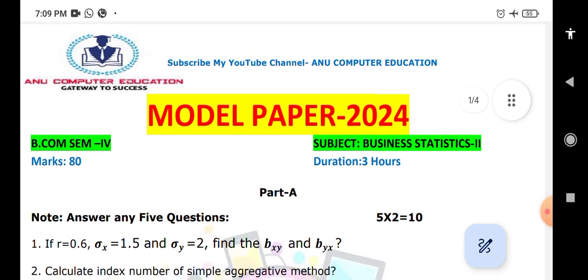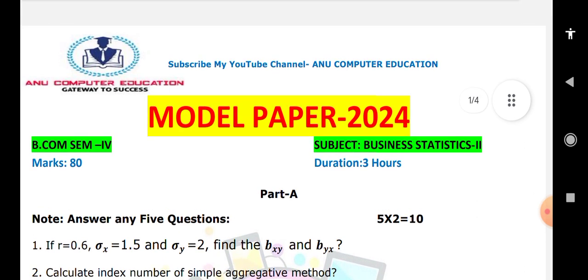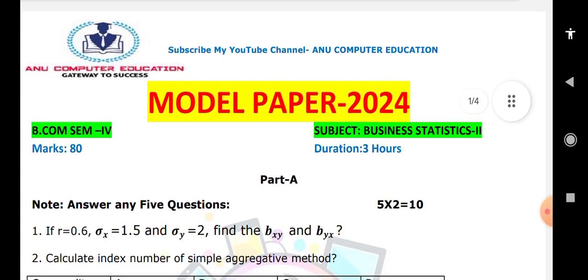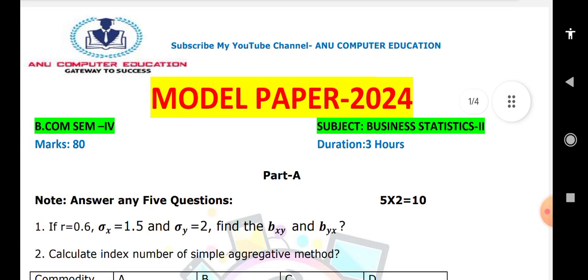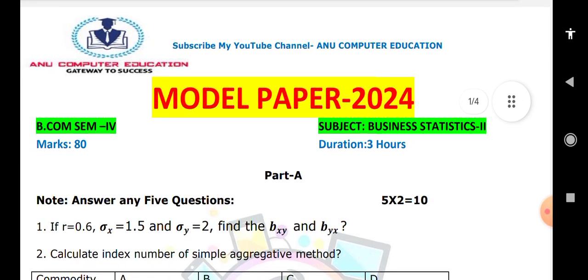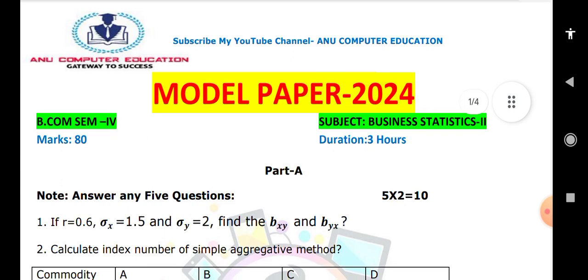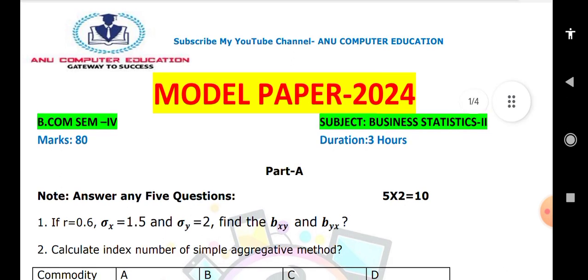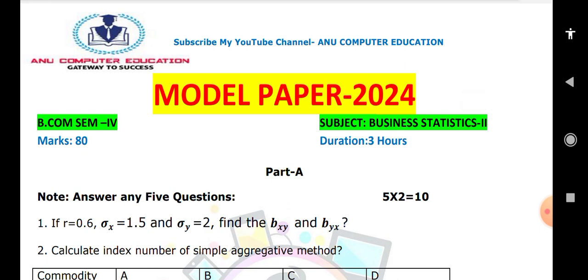The first question: if r equals 0.6, sigma x value is given, and we have to calculate the two regression equations bxy and byx. So we have to use r into bxy equals sigma x by sigma y. For byx, we have to calculate r into sigma y by sigma x. The two regression coefficients we have to calculate.